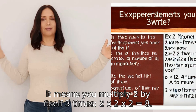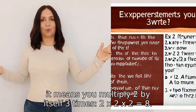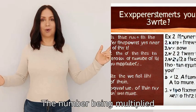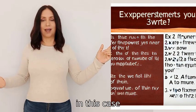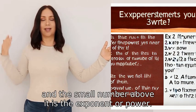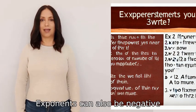it means you multiply 2 by itself three times: 2 × 2 × 2 equals 8. The number being multiplied is called the base, and the small number above it is the exponent or power.